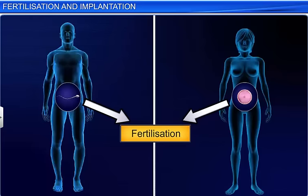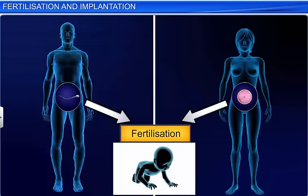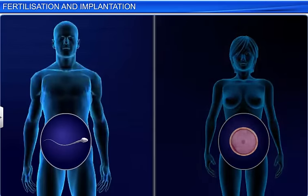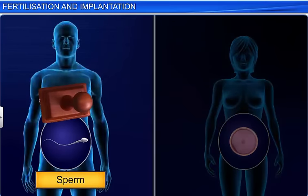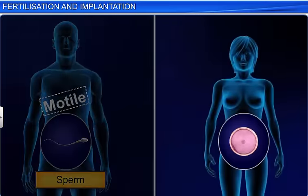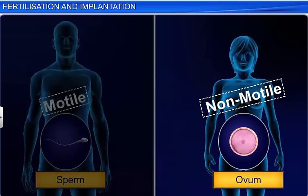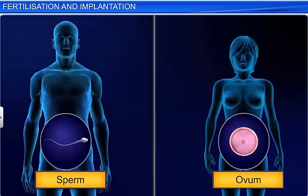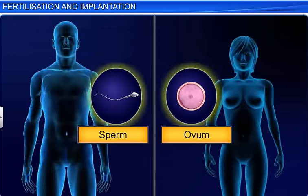Fertilization or fusion of gametes is the most vital event in the process of sexual reproduction, as it results in new life. In humans, while the male gamete or sperm is motile, the female gamete or ovum is non-motile. Therefore, for fertilization to occur, the two gametes must be brought together.